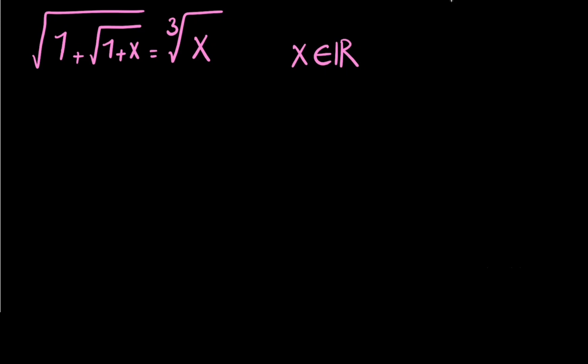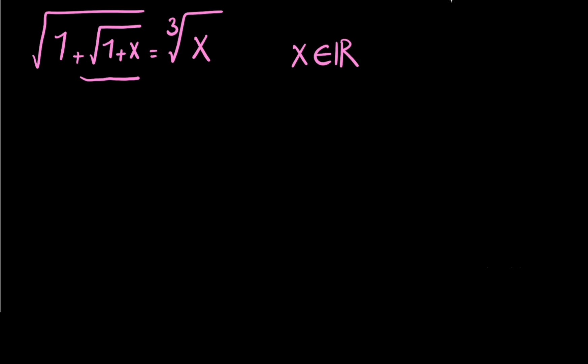Welcome to MassMitMarket. Today we're going to solve a really nice math Olympiad problem. If we have a square root of 1 plus square root of 1 plus x, that's equal to cube root of x, and we know that x is a real number, we want to find x in this equation.